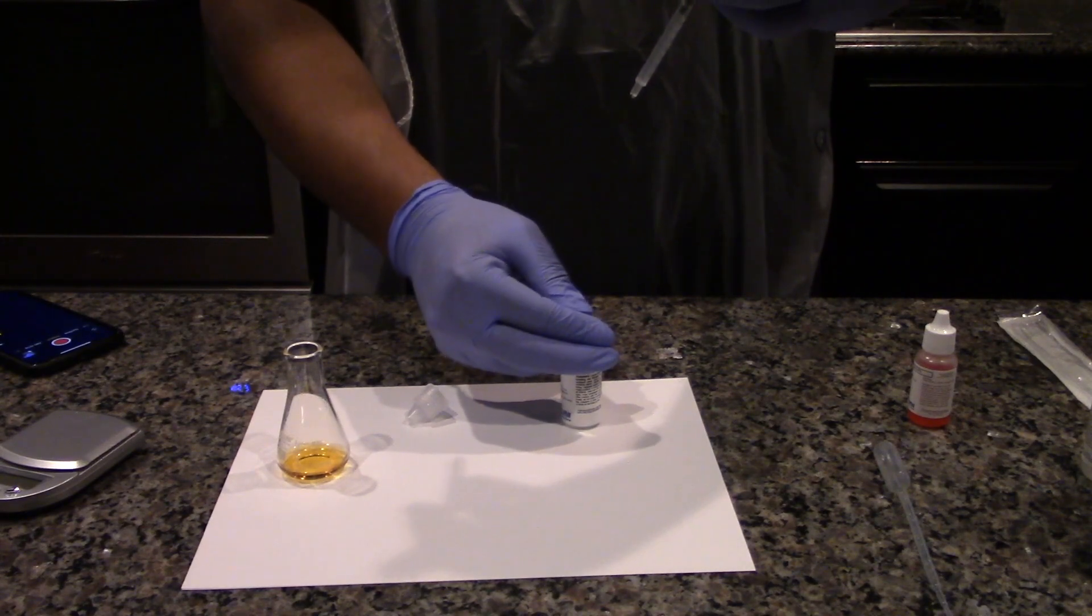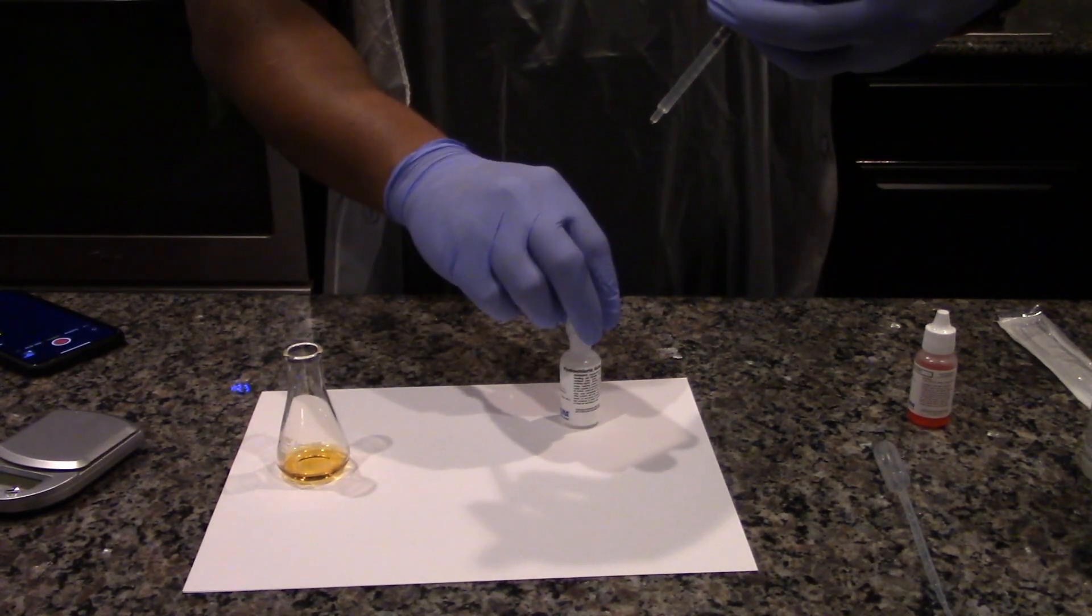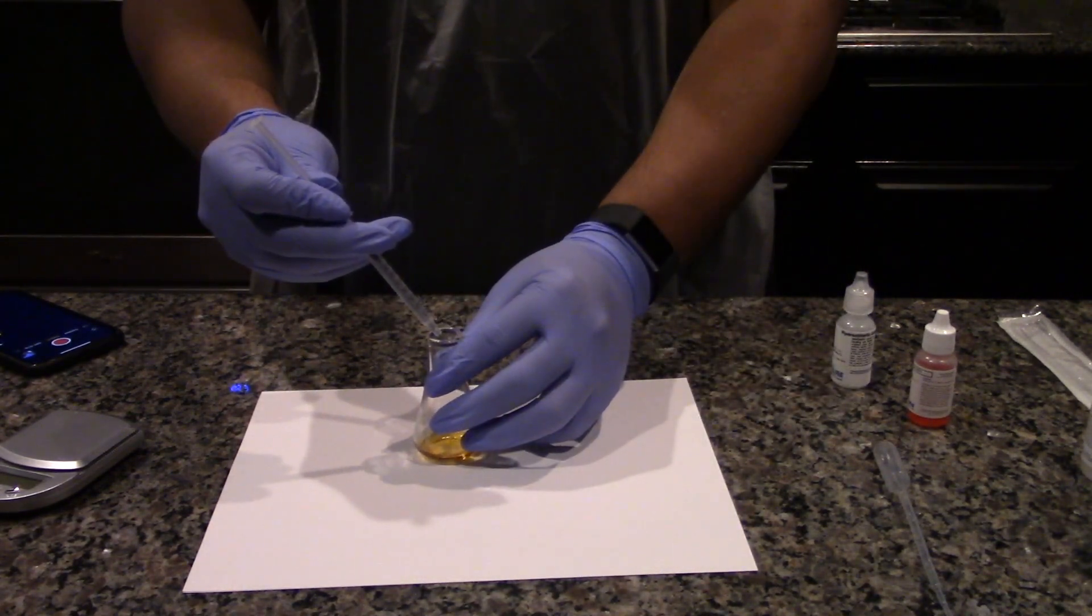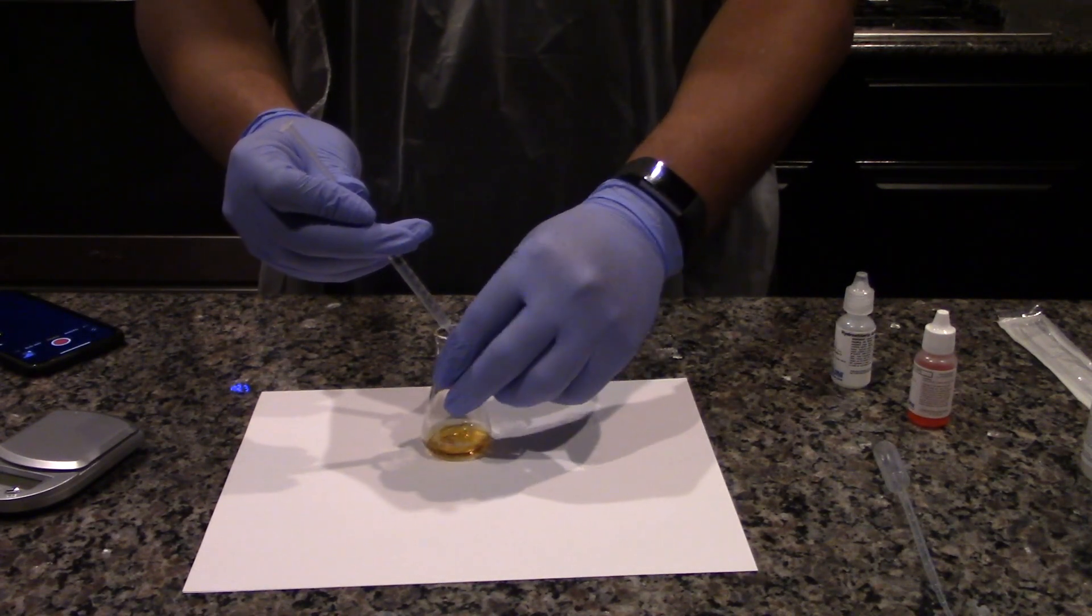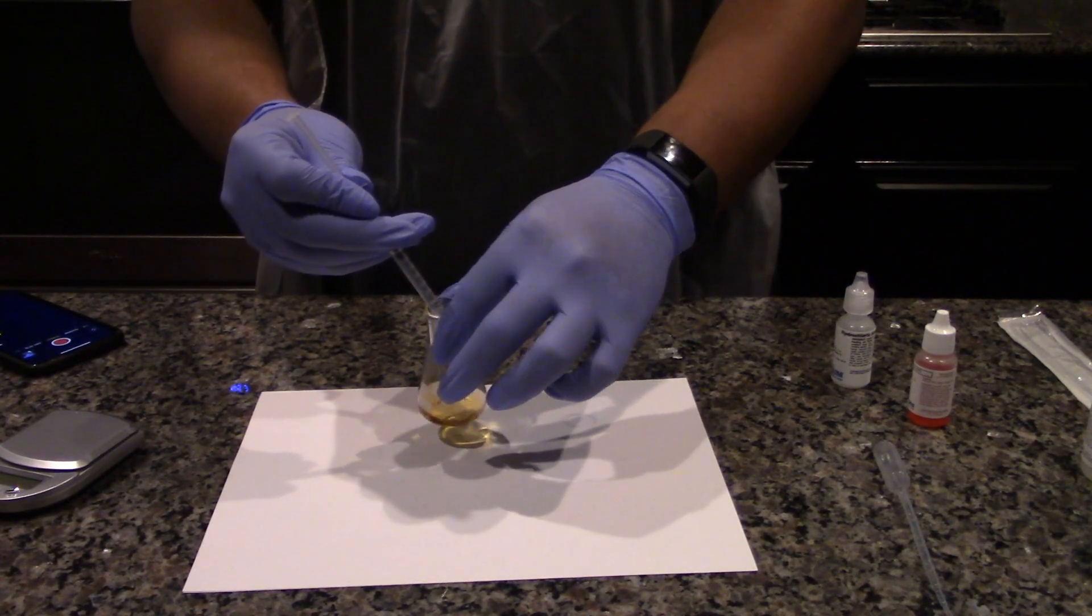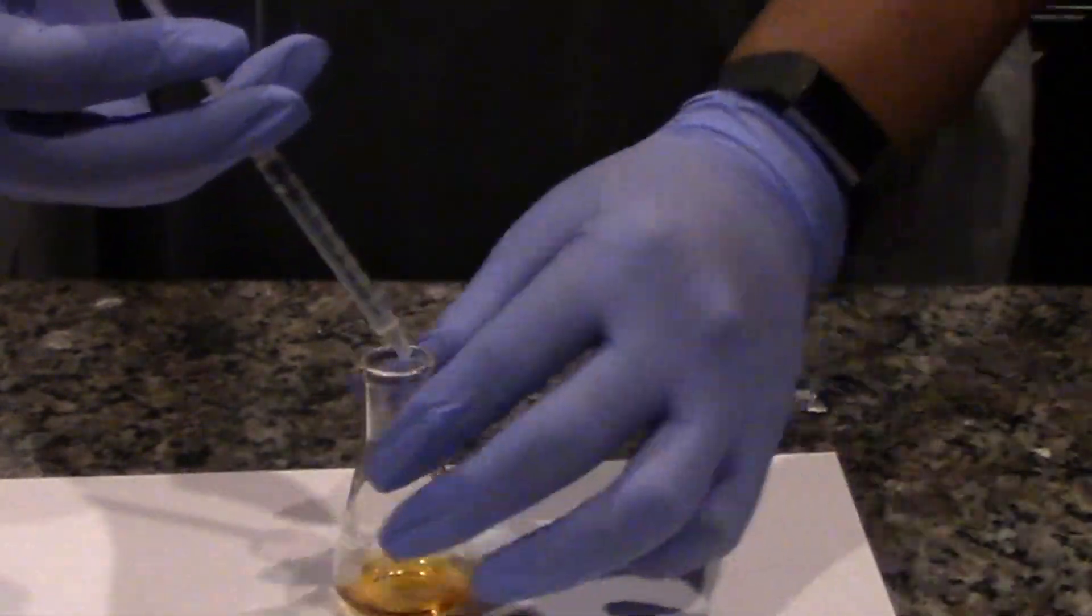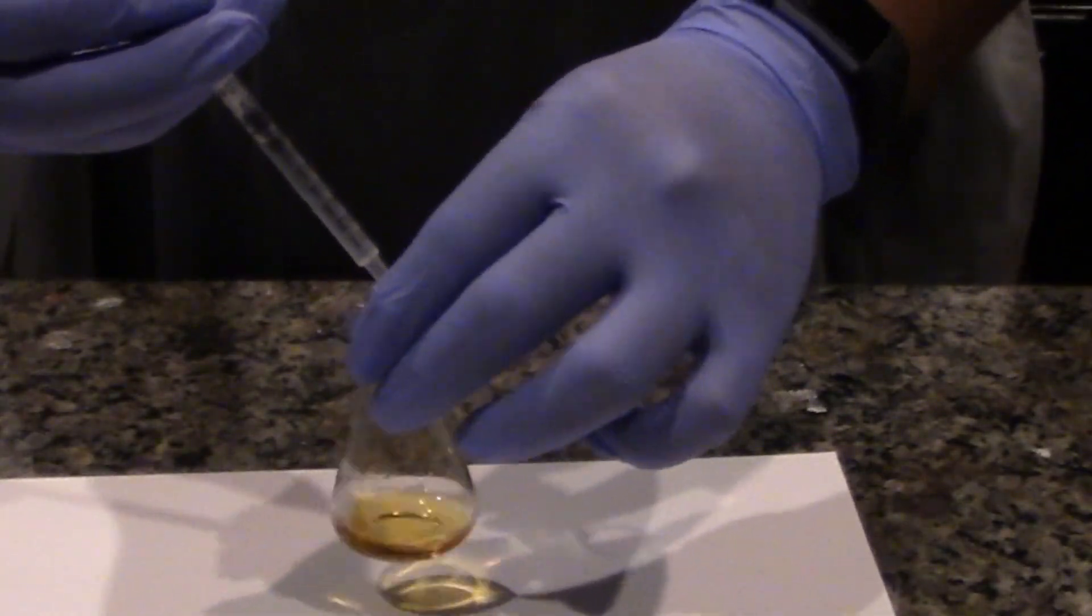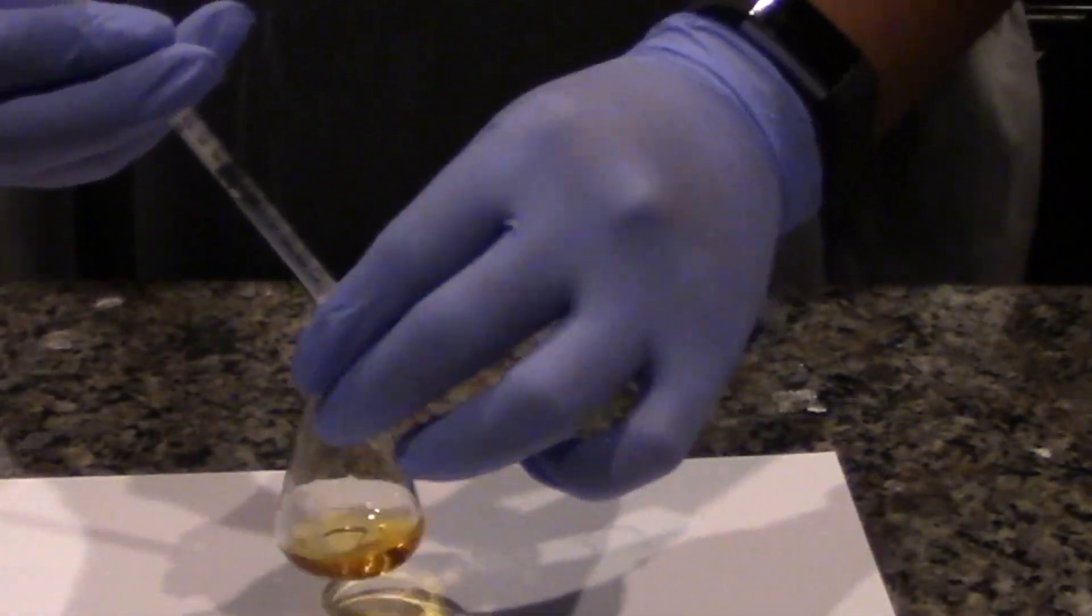Place the flask containing the 3 milliliters of calcium hydroxide on a white sheet of paper. The white background will make the color change more noticeable. Add HCL dropwise from the syringe with constant swirling of the flask until a single drop of HCL causes a color change that persists for 20 to 30 seconds after addition. This indicates the endpoint has been reached.